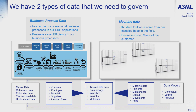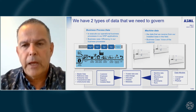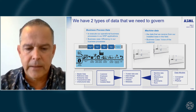The other type of data that we have is the machine data — the installed base that generates data every day and provides us with diagnostic data and performance data of the machines. That's important for us to feed it back into the engineering process where we can improve the engineering and the performance of our products. On the other hand, it also feeds back into the customer service processes to improve the service that we provide. Both types of data we use are stored in data lakes, which we use for data analytics and reporting.